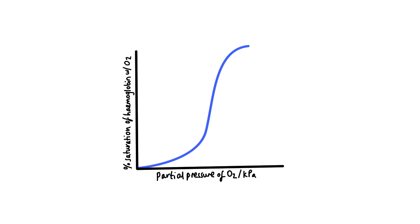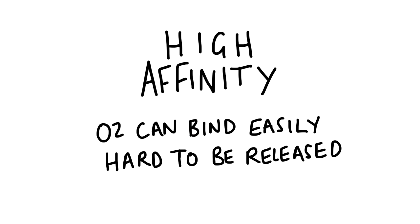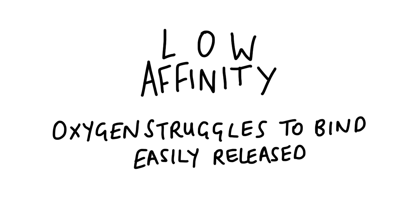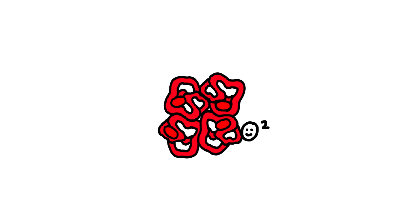An oxygen dissociation curve shows how saturated the hemoglobin molecule is with oxygen at any given partial pressure, and how saturated it is depends on whether it has a high or low affinity. It's very difficult for the first oxygen molecule to bind to hemoglobin, but once it does, the protein undergoes a conformational change in shape, which makes it easier for the next two O2 molecules to bind to it.